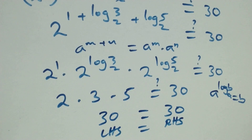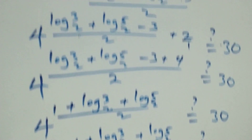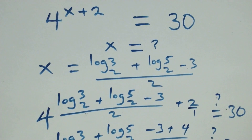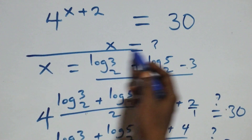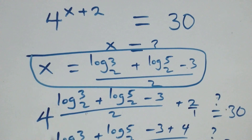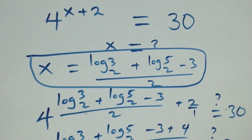Therefore, we conclude that x equals log₂3 plus log₂5 minus 3, all over 2, satisfies the given problem. Thank you for watching. Don't forget to subscribe for more videos and turn on your notification bell. Share this video and give it a thumbs up.